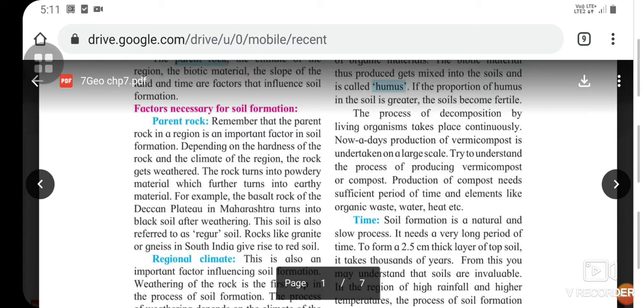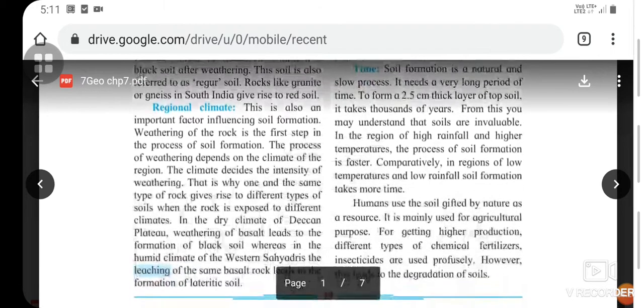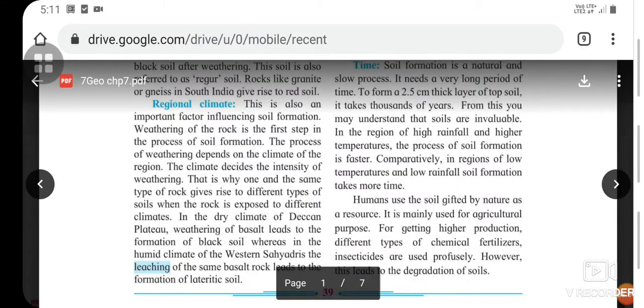The rock turns into powdery material which further turns into earthy material. For example, the basalt rock of the Deccan plateau in Maharashtra turns into black soil after weathering. This soil is also referred to as regur soil. Soils like granite or gneiss in South India give rise to red soil.